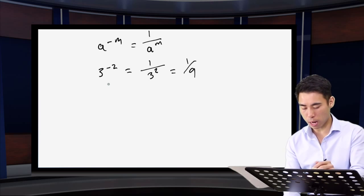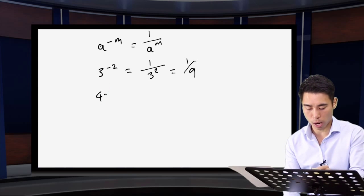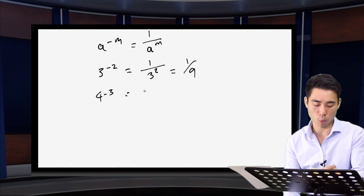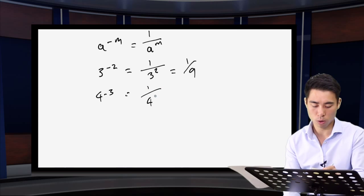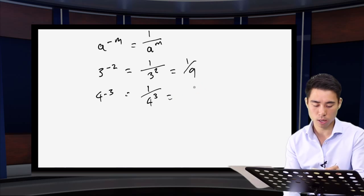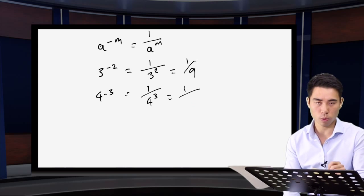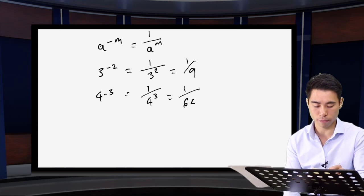Similarly, if I have four to the minus three, it's going to be one over four raised to the three, which is the same as one over 64.